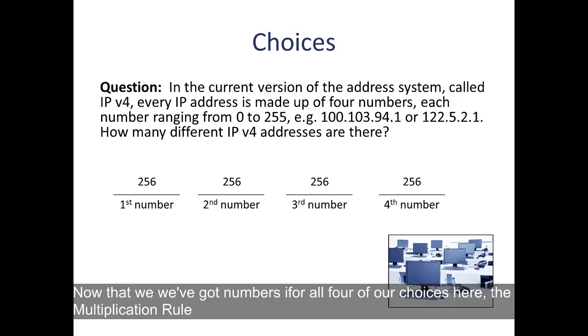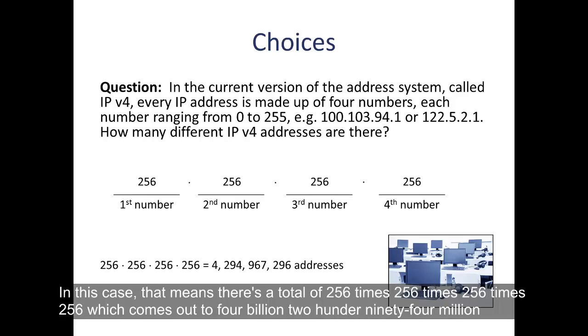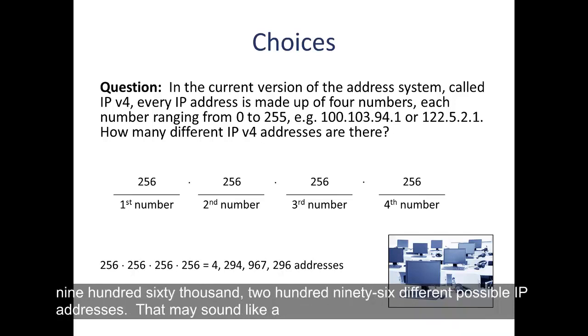Now that we've got numbers for all of our choices here, the multiplication rule tells us that the total number of combinations is equal to the product of the number of choices for each of the four options. In this case, that means there's a total of 256 times 256 times 256 times 256, which comes out to 4,294,960,296 different possible IP addresses.